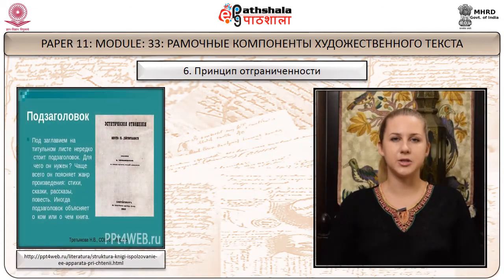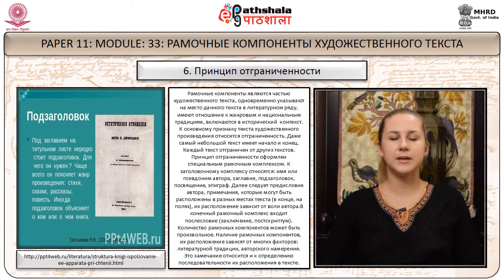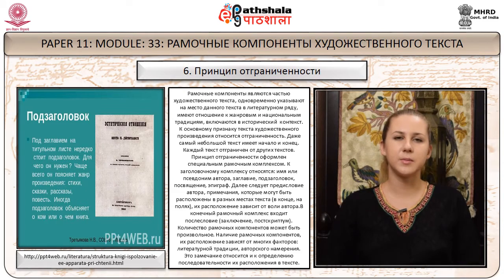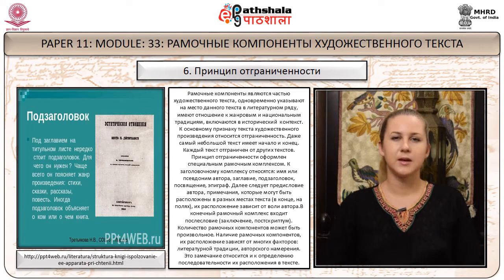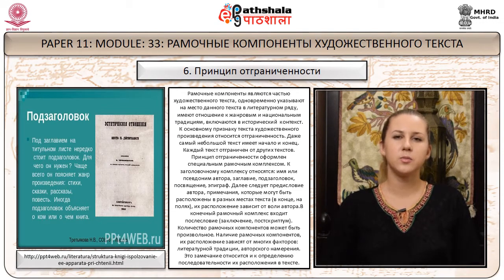Принцип отграниченности. Рамочные компоненты являются частью художественного текста, одновременно указывают на место данного текста в литературном ряду, имеют отношение к жанровым и национальным традициям, включаются в исторический контекст. К основному признаку художественного текста относится отграниченность: даже самый небольшой текст имеет начало и конец. Принцип отграниченности оформлен специальным рамочным комплексом. К заголовочному комплексу относятся имя или псевдоним автора, заглавие, подзаголовок, посвящение, эпиграф.